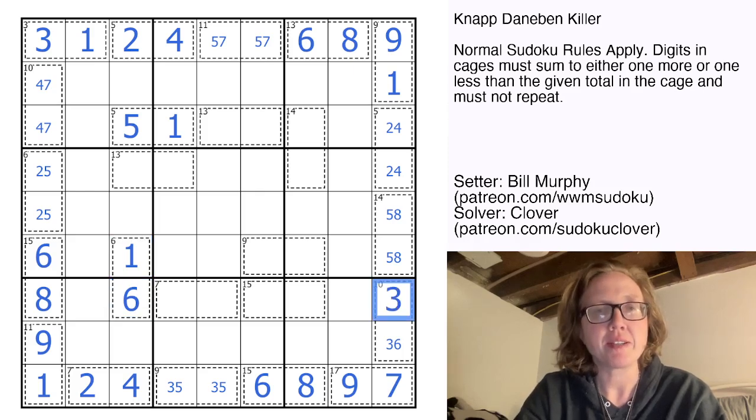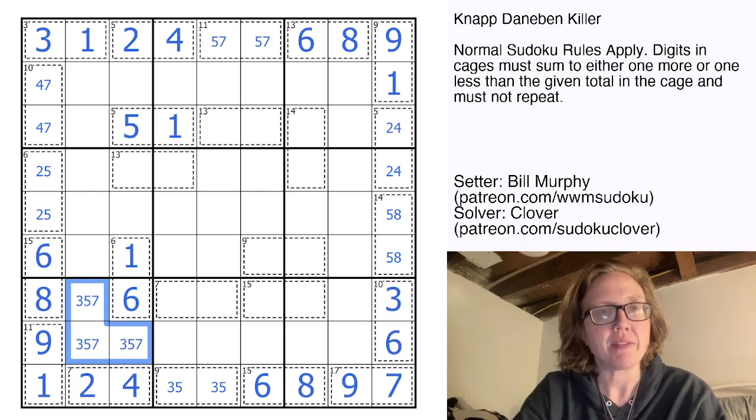Now that we've placed a six here, that's going to be a three and a six. These will be three, five, and seven. So that is not a three, that's not a five, just by Sudoku.